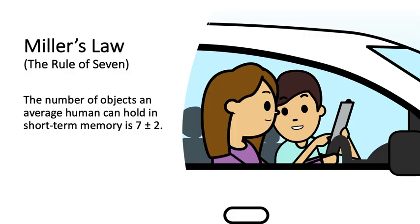Miller's Law, also known as the rule of seven: the number of objects an average human can hold in short-term memory is seven plus or minus two. As you go through Level 3 training, be wary of overloading the student with too much information.